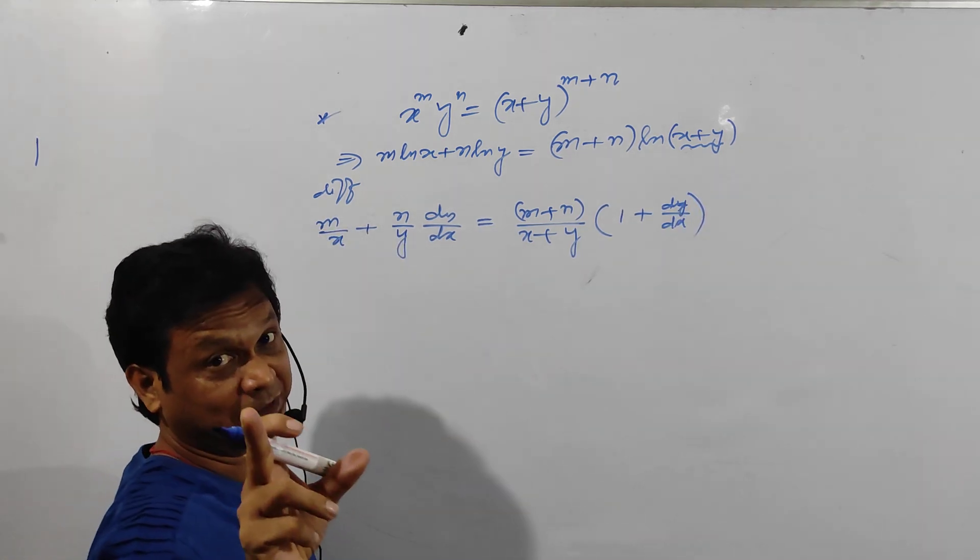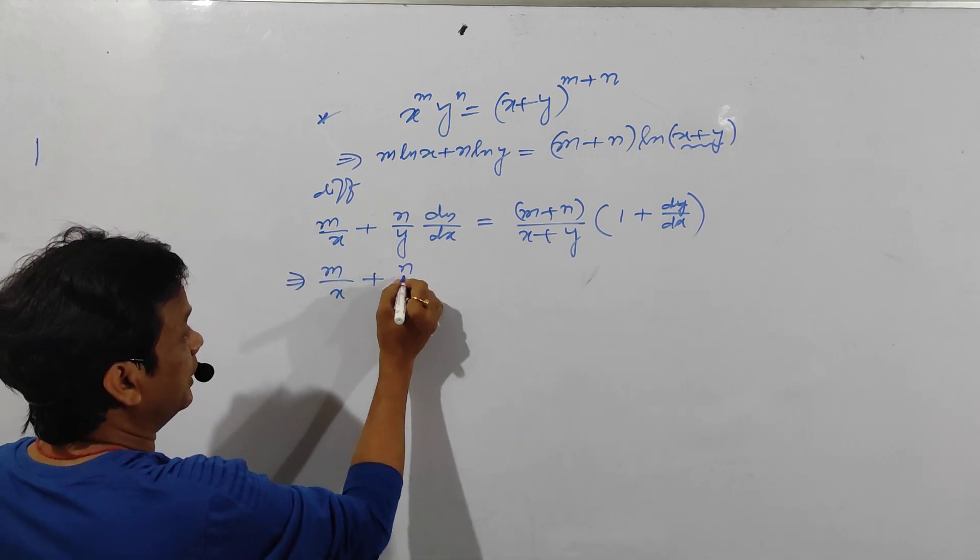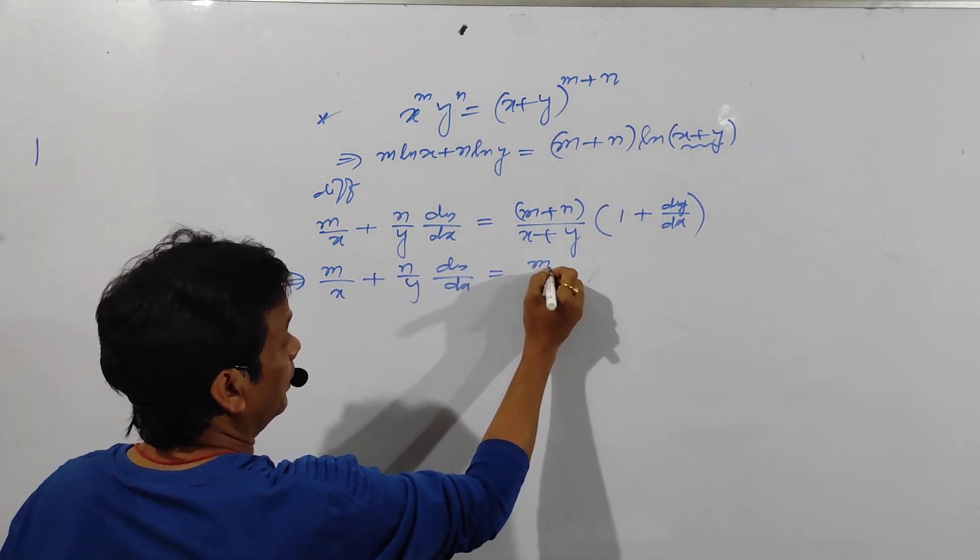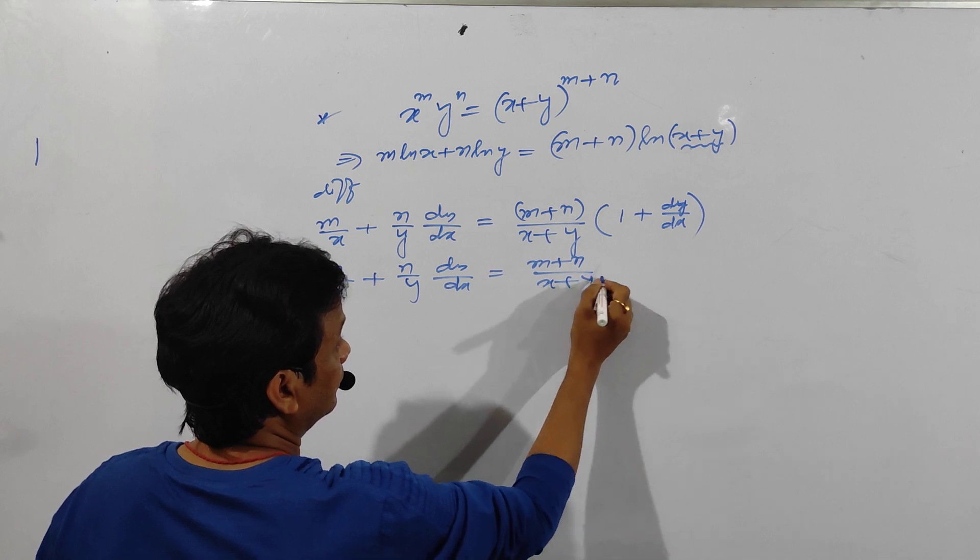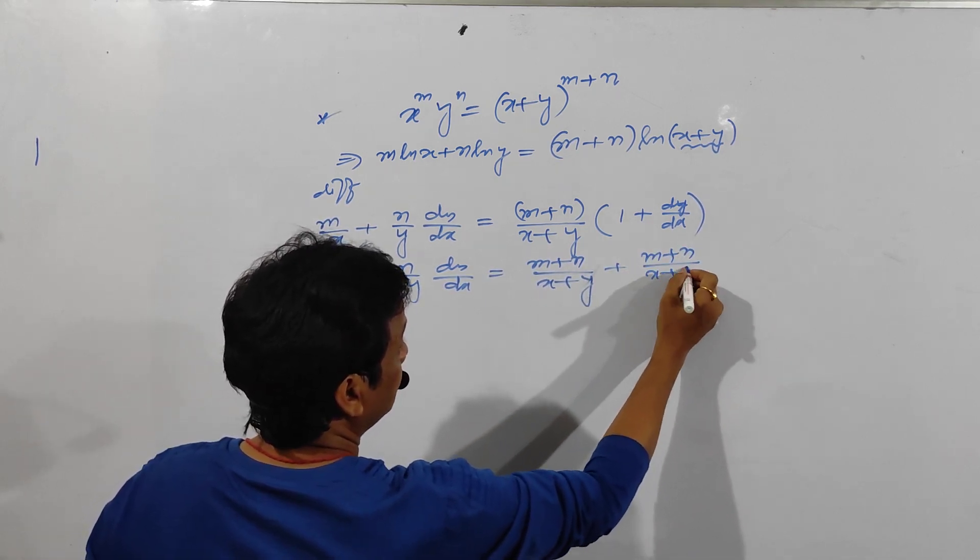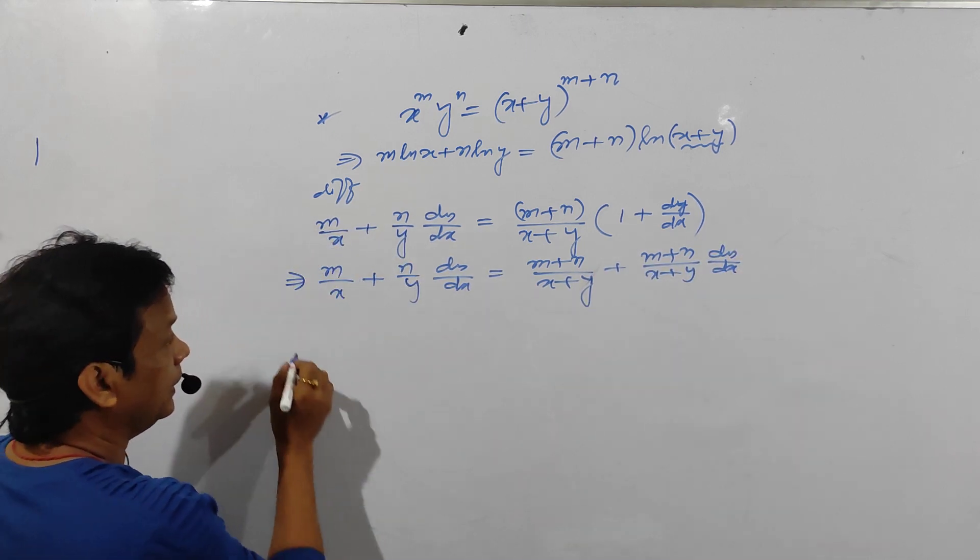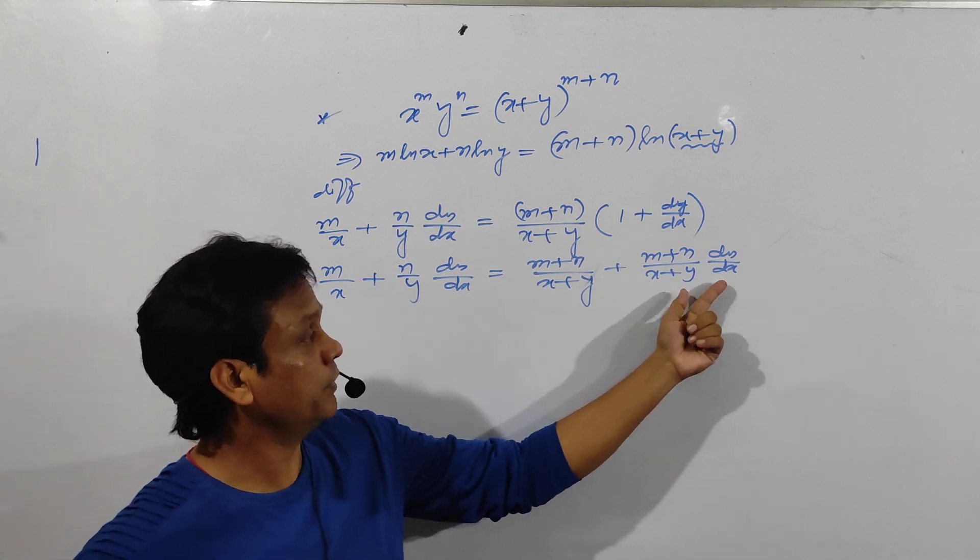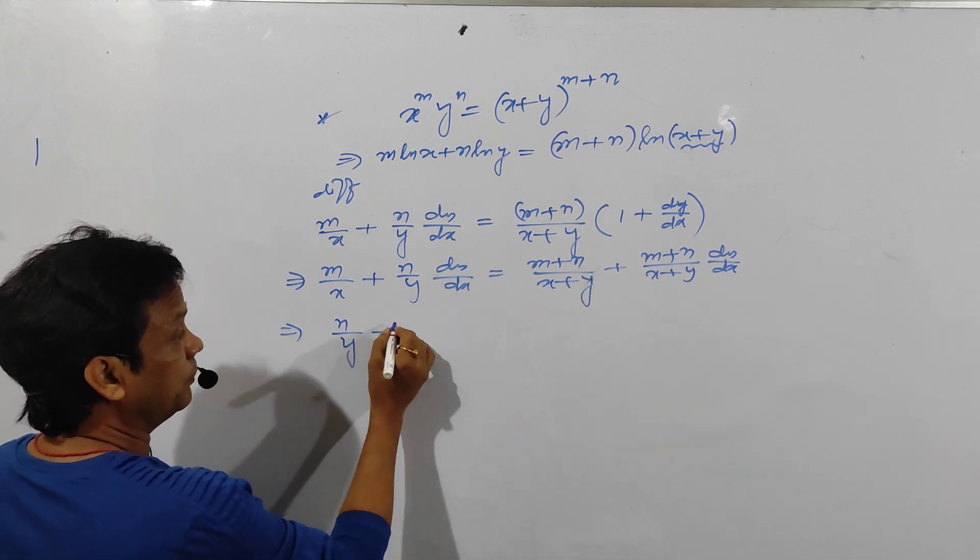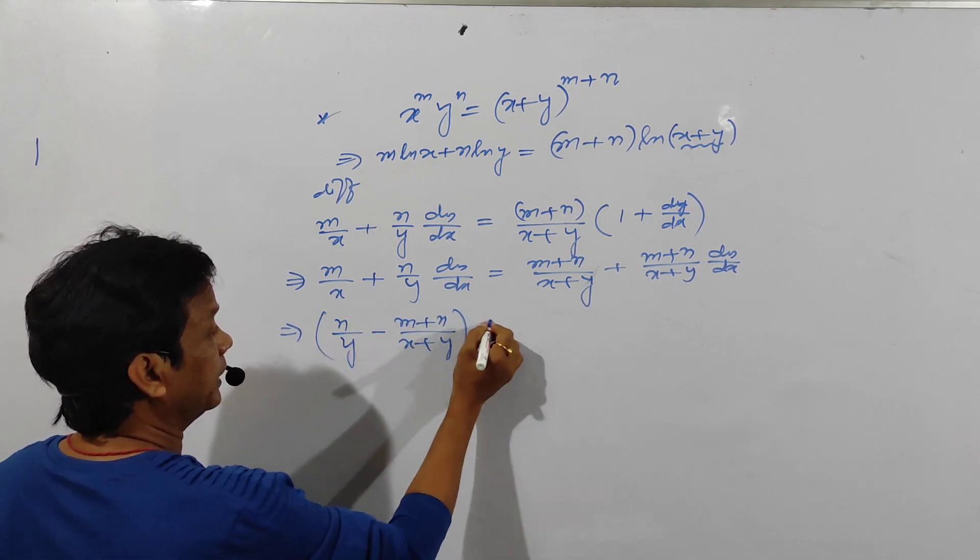So see here, dy by dx appears here and here. Take to one side. So m by x plus n by y into dy by dx equals m plus n by x plus y into dy by dx. Take to one side, we are taking common, dy by dx common.